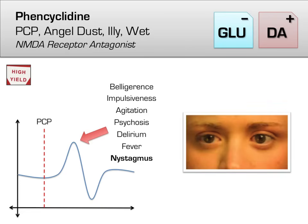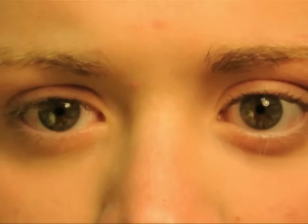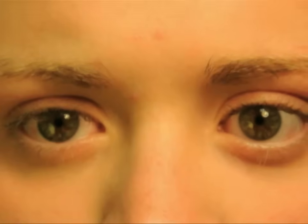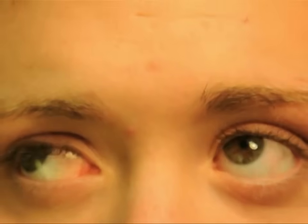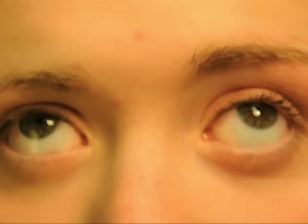Test questions on PCP intoxication will sometimes state that the patient is exhibiting signs of horizontal, vertical, and/or rotary nystagmus on exam — this is also classic for PCP intoxication. Nystagmus is a rhythmic, involuntary movement of the eyes, and is one of the first signs parents may observe in a child with congenital visual impairment. It is most often a horizontal pendular nystagmus where the eyes rock back and forth like a pendulum, though stress, emotions, and direction of gaze can cause changes in the nystagmus.